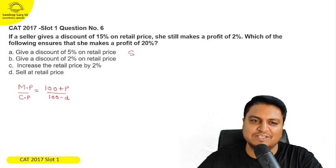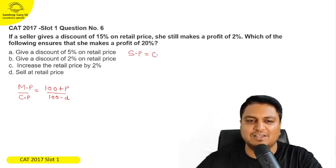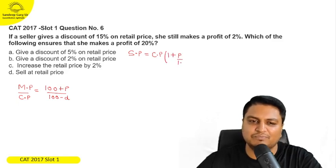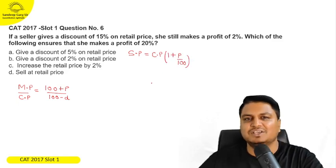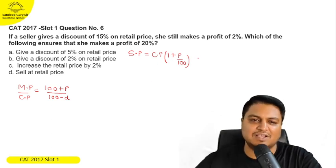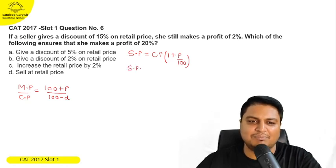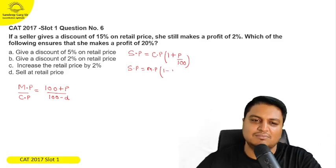Let's derive this. Actually, there are two ways to remove selling price. One is cost price - you can add profit in cost price, that is 1 plus P by 100. And the other way to remove selling price is you can give mark price. These are two ways.